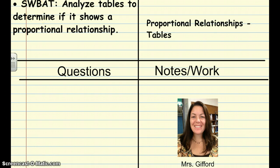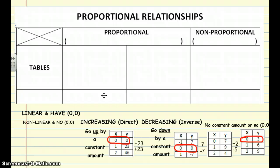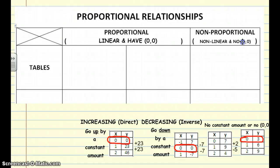So grab that purple proportional relationships sheet and we're going to fill out the top part of it about tables and then we'll fill in the other part with graphs and equations at a later date. First thing that we need to understand is that a proportional relationship is linear and it has the point (0,0) as one of its coordinates. In the same respect, a non-proportional relationship is non-linear and there is no (0,0) in its table.